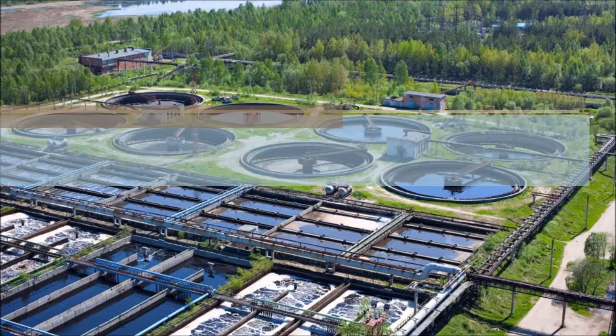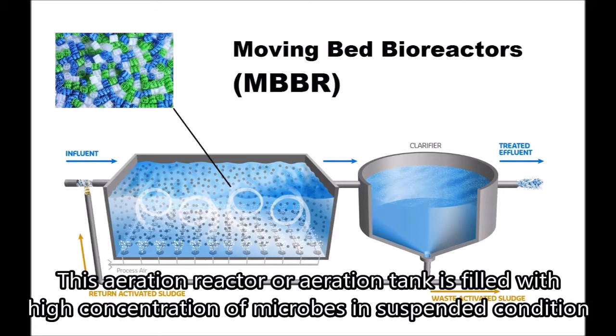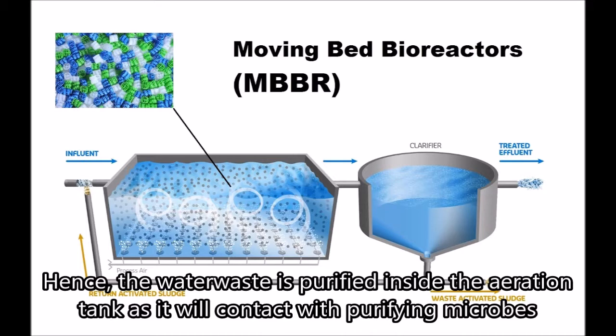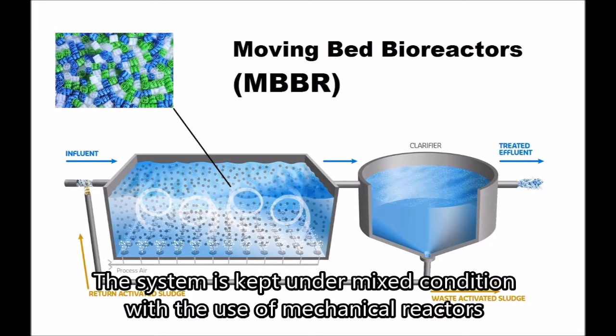The treatment process starts with sludge waste being fed to an aeration reactor. This aeration reactor, or aeration tank, is filled with a high concentration of microbes in a suspended condition. The wastewater is purified inside the aeration tank as it contacts with purifying microbes. The microbes oxidize dissolved organic matter from the sludge waste into simple end products and new cells.